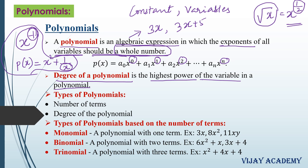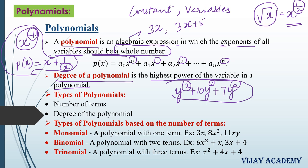For example, take a polynomial like y square plus 10y plus 7. In this, the exponent of the first term is 2, the second term has exponent 1, and the third term has exponent 0. So the highest power is 2, and therefore the degree of this polynomial is 2.